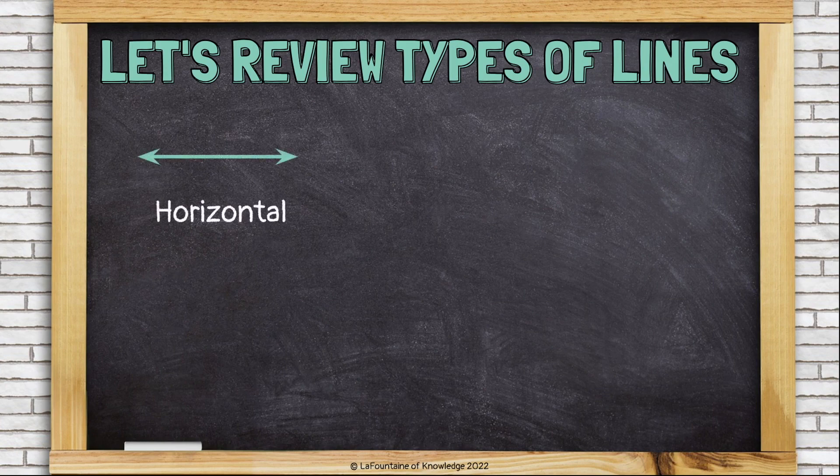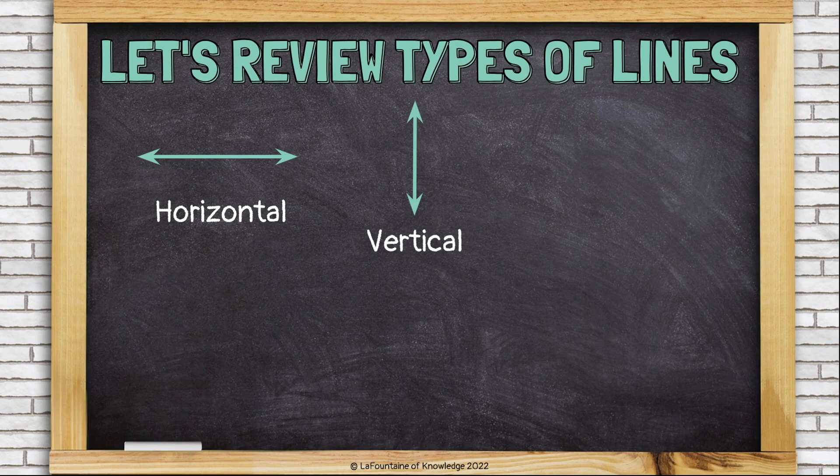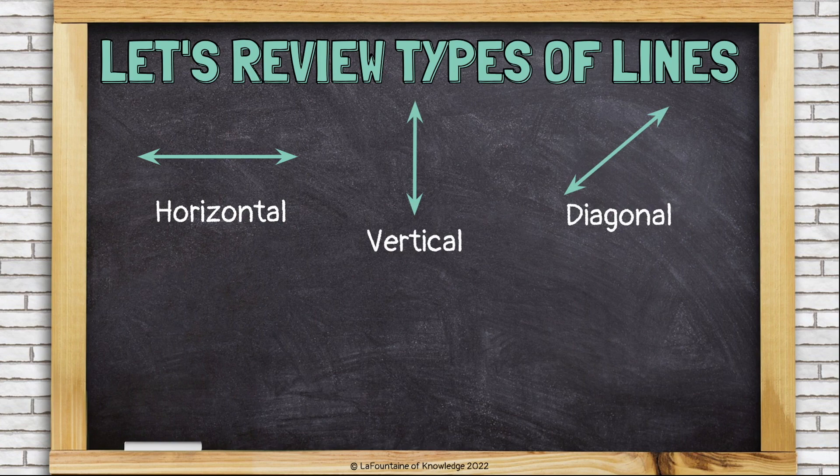This is a horizontal line. Horizontal lines run from left to right. This is a vertical line. A vertical line goes up and down. And a diagonal line goes from corner to corner.